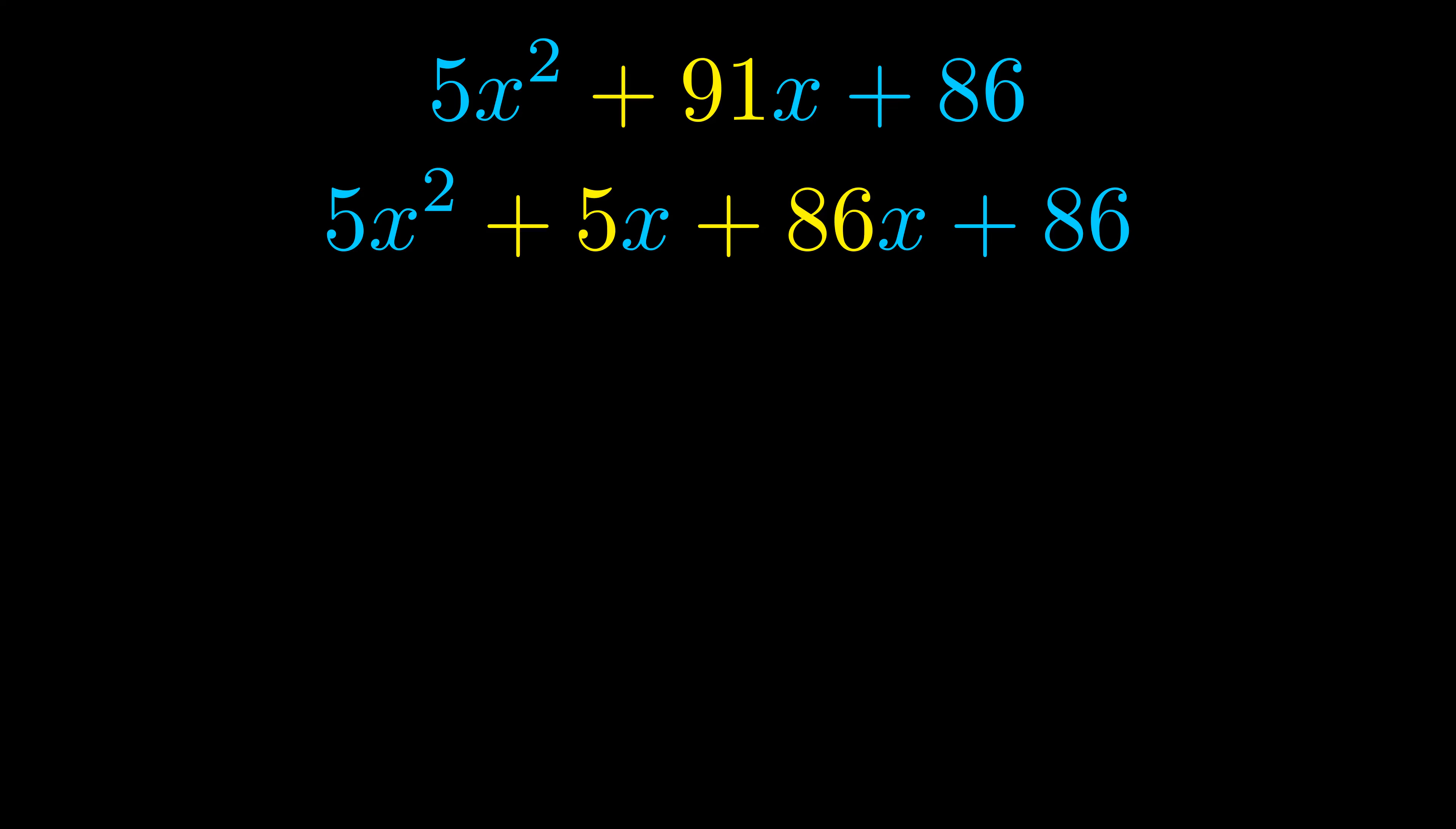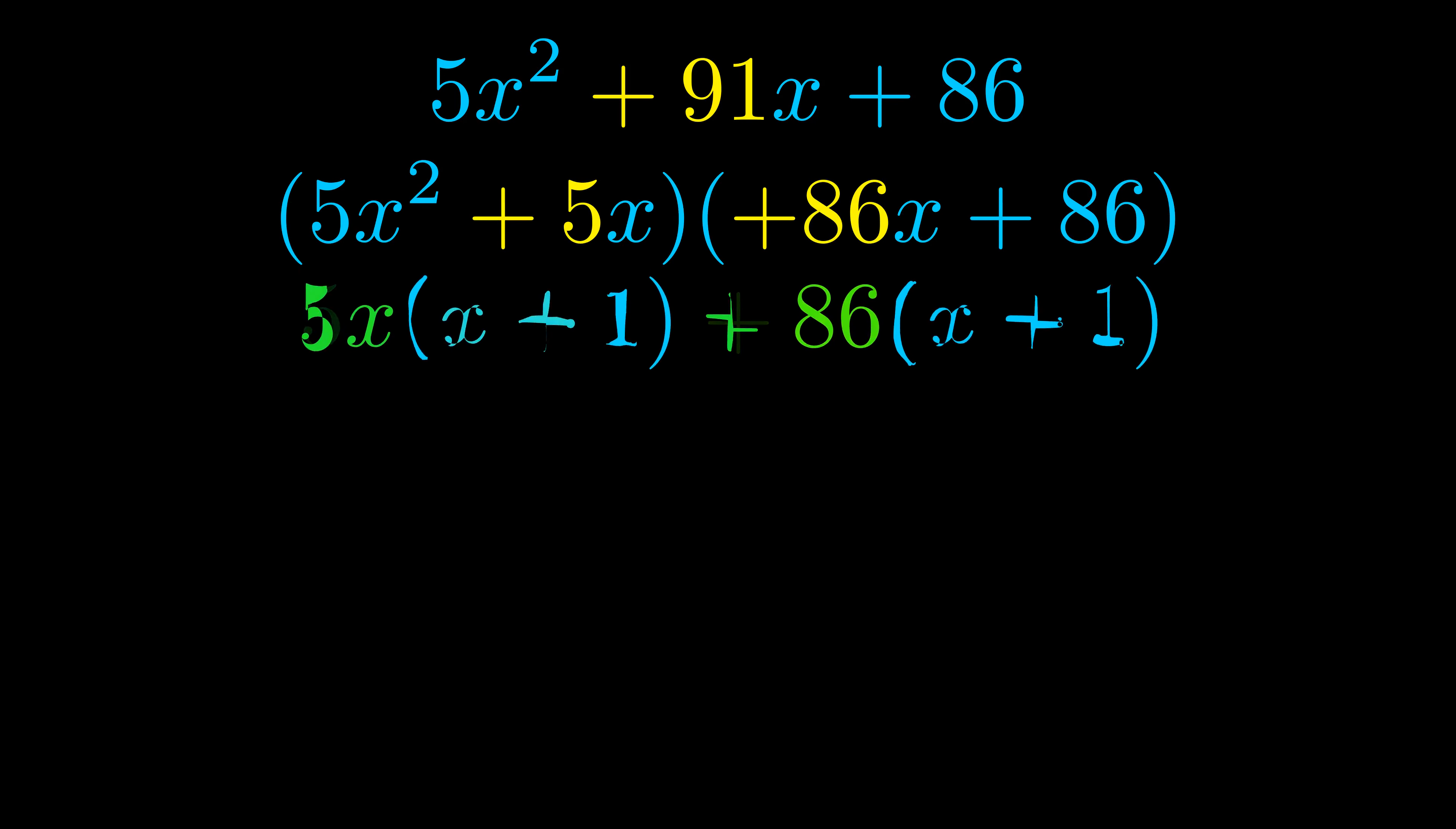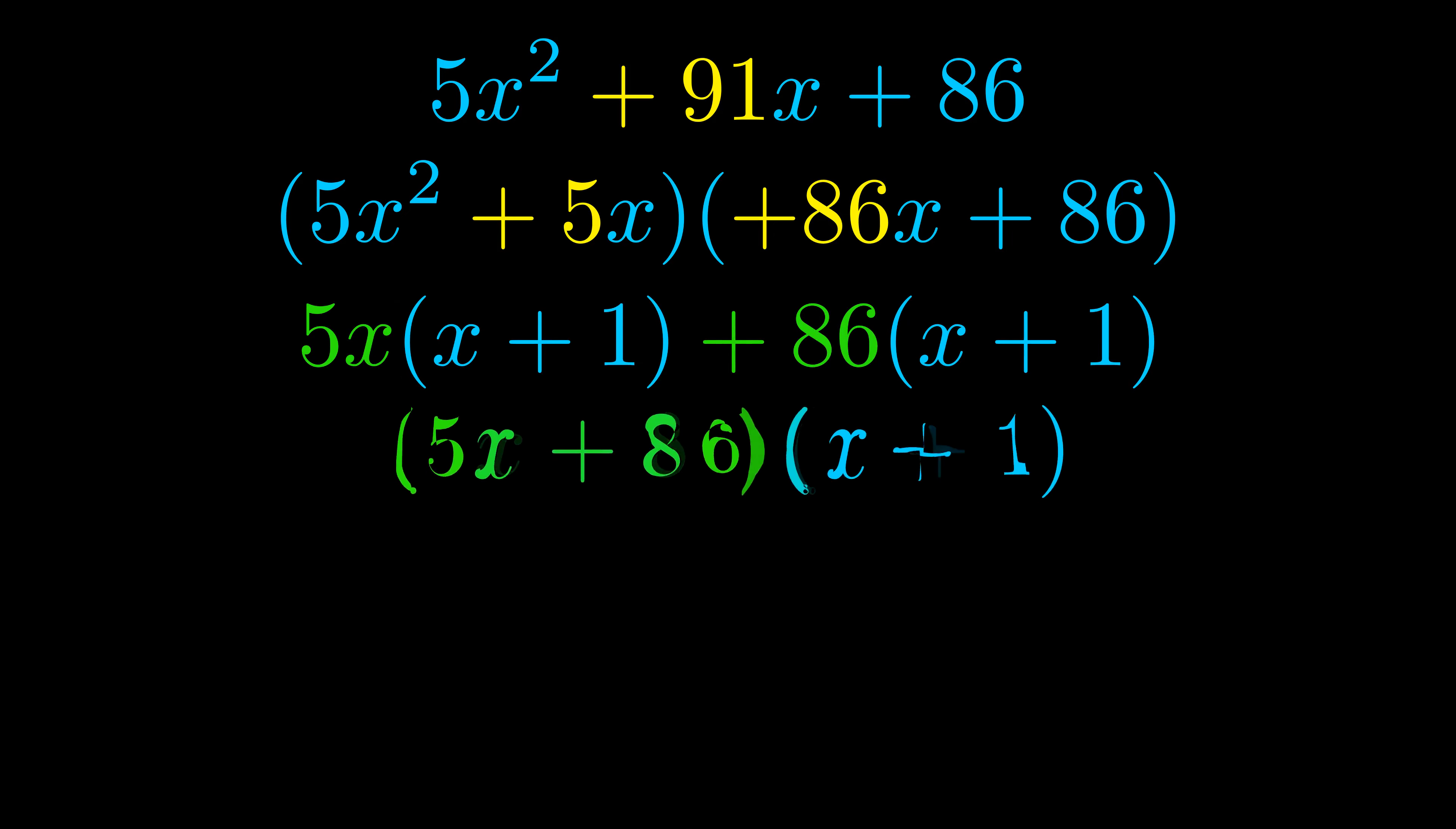Once we've done this we go ahead and we put parentheses around the first term and the last term. And we do that so that we can take the greatest common factor out of both terms. We can see the greatest common factor is now outside in green. Notice also how what remains inside of the parentheses is the same in both cases. The blue values are the same.